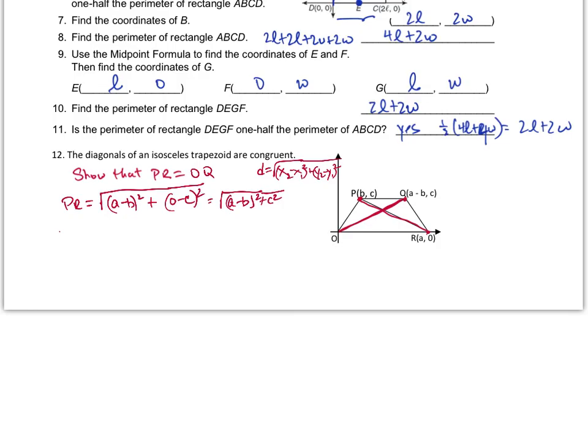So let's find what OQ is and see if this matches. So OQ will be A minus B, this is 0, 0 over here, A minus B minus 0 squared plus C minus 0 squared. And let's see if this comes out to work, what this comes out to be when we simplify it. It'll be A minus B squared plus C squared.